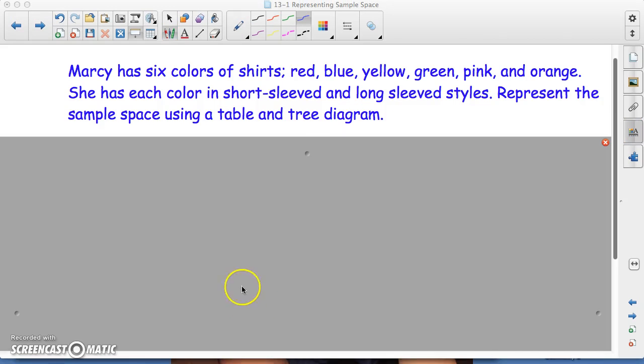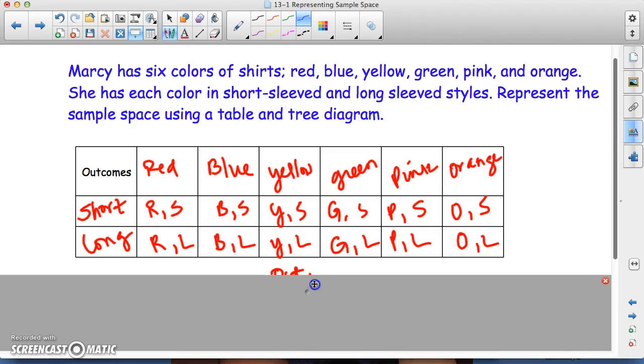So your table should look something like this. The red short sleeve, red long sleeve, blue short sleeve, blue long sleeve. This is your sample space. So these are all the possible outcomes.